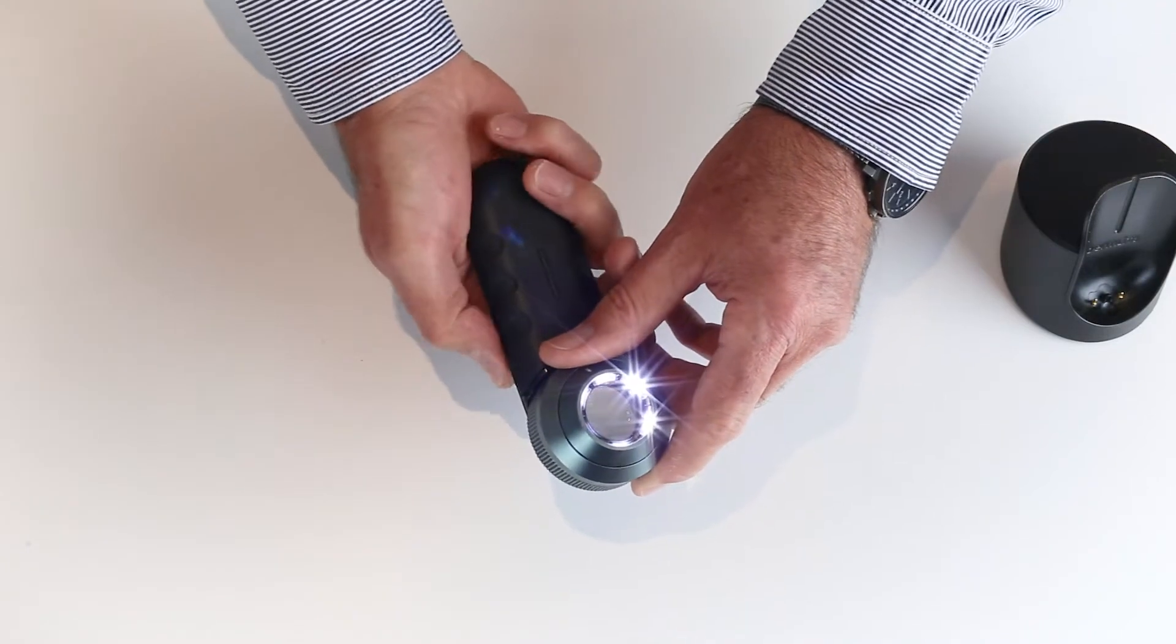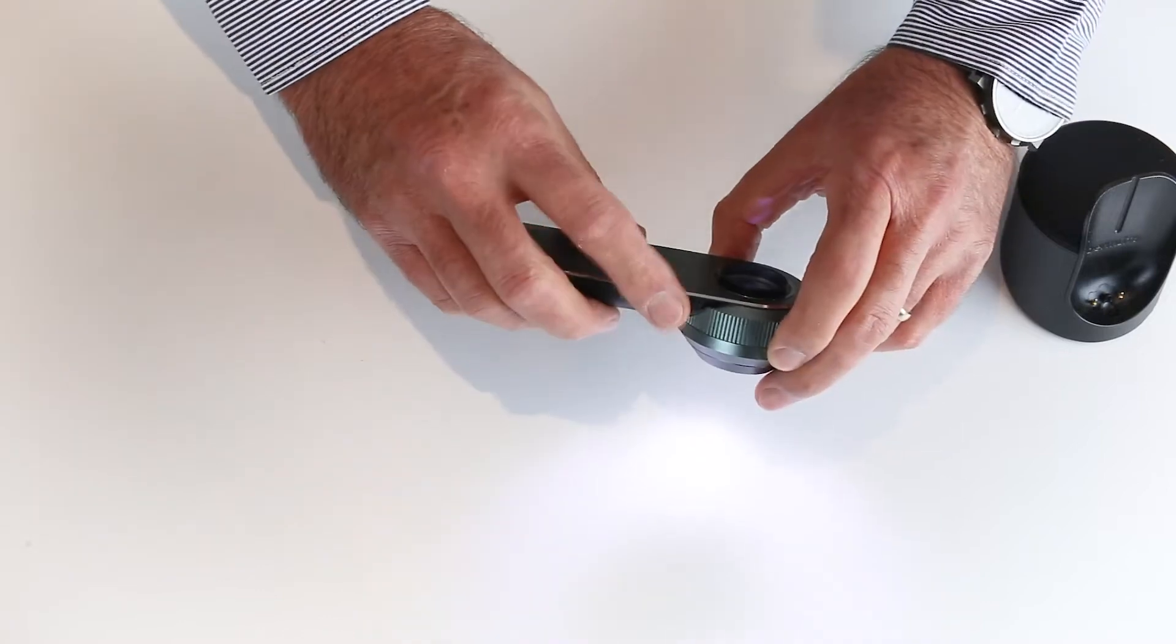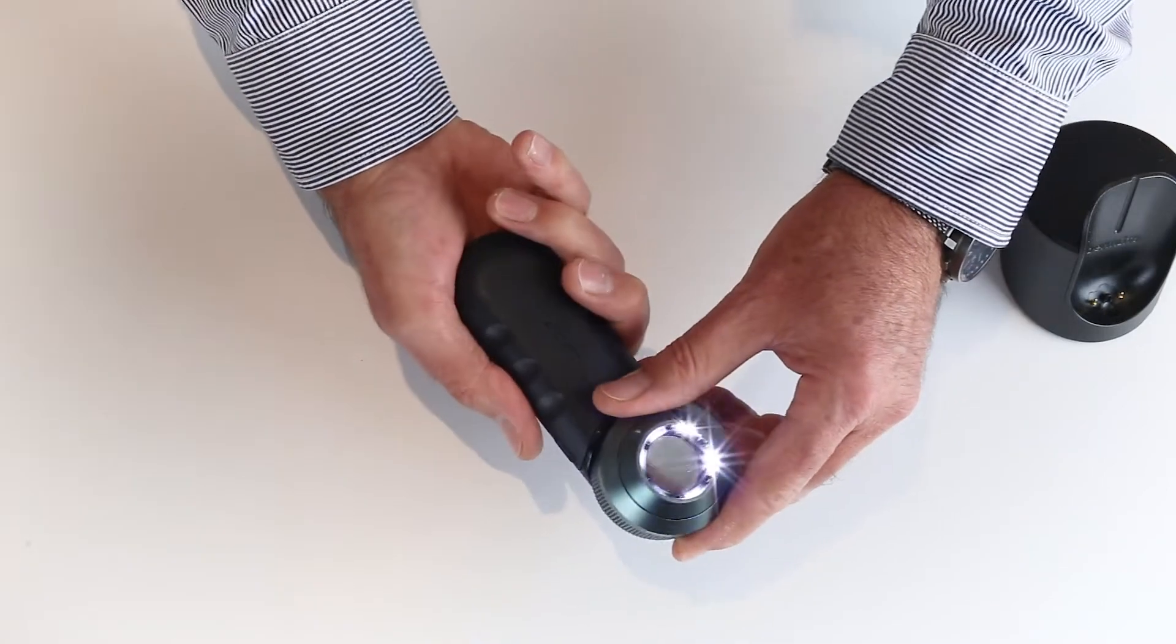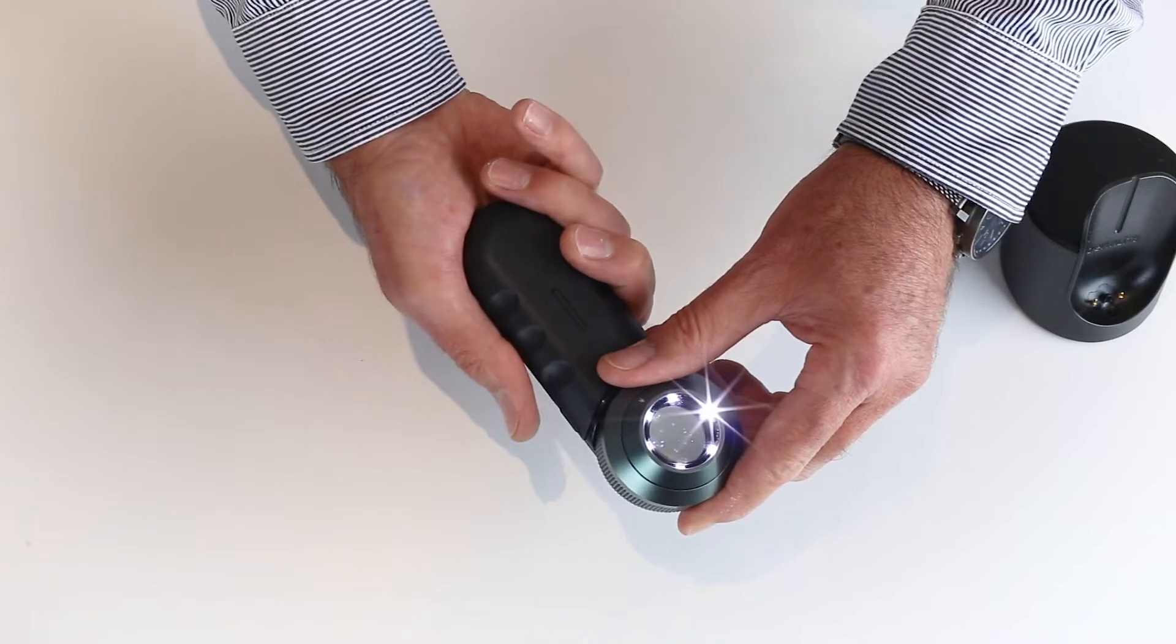By pressing the button again—the button by the way is this one here—you can toggle between polarized and non-polarized mode.